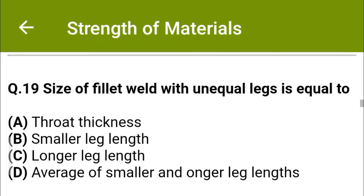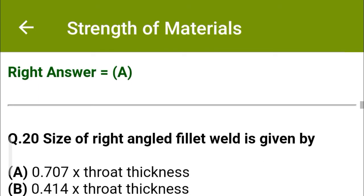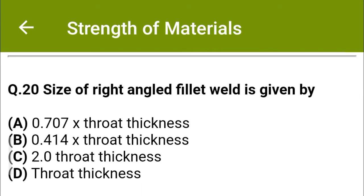Next question: The size of a fillet weld with unequal legs is equal to — option A: throat thickness, option B: smaller leg length, option C: longer leg length, option D: average of smaller and longer leg lengths. The correct answer is option A: throat thickness.